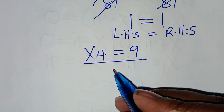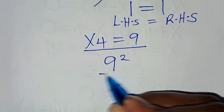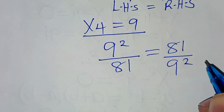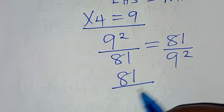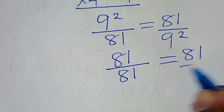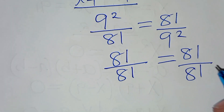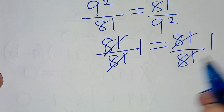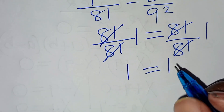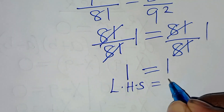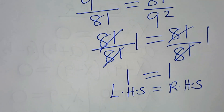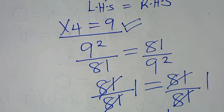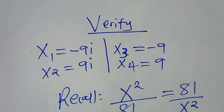Let's check x₄ = 9. Substituting into the equation: 9² over 81 equals 81 over 9². So 81 over 81 equals 81 over 81, which simplifies to 1 equals 1. The left hand side equals the right hand side, and this implies that x₄ = 9 also satisfies the equation. Therefore, all four solutions satisfy the equation.